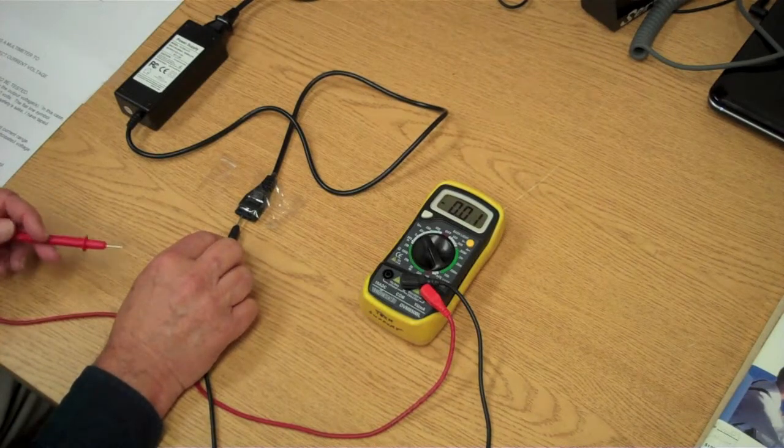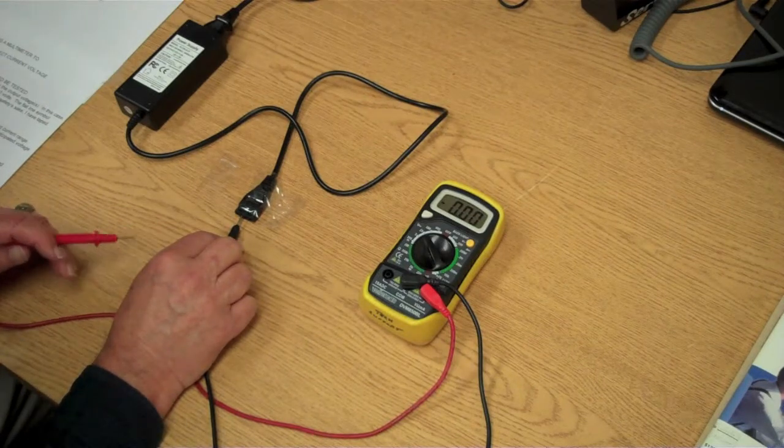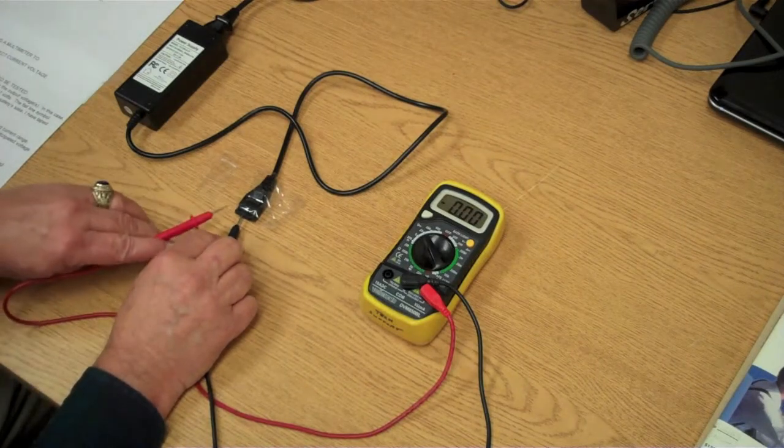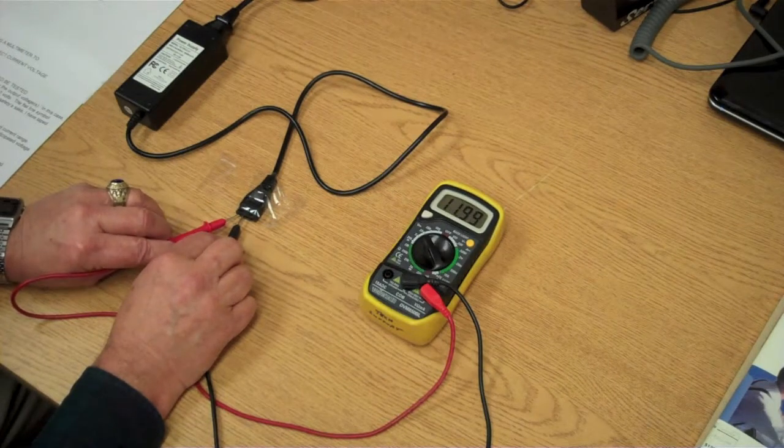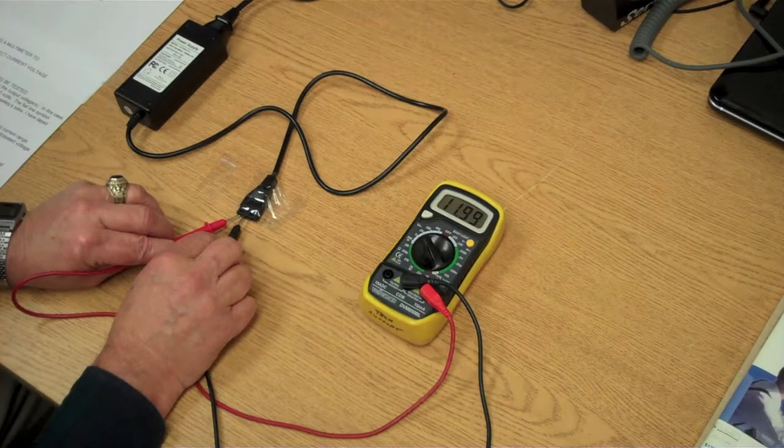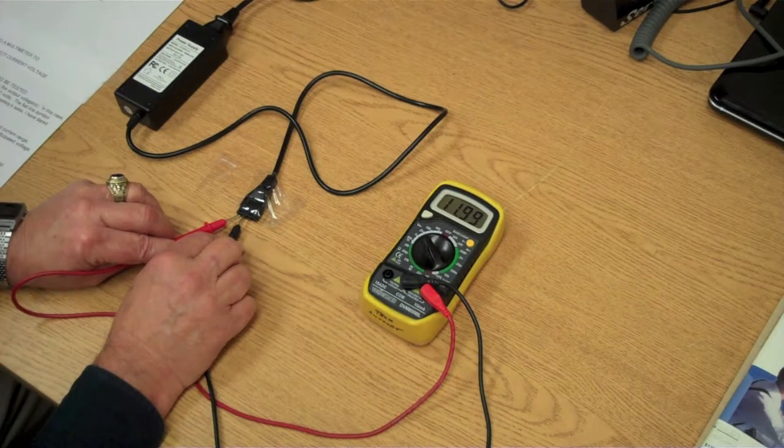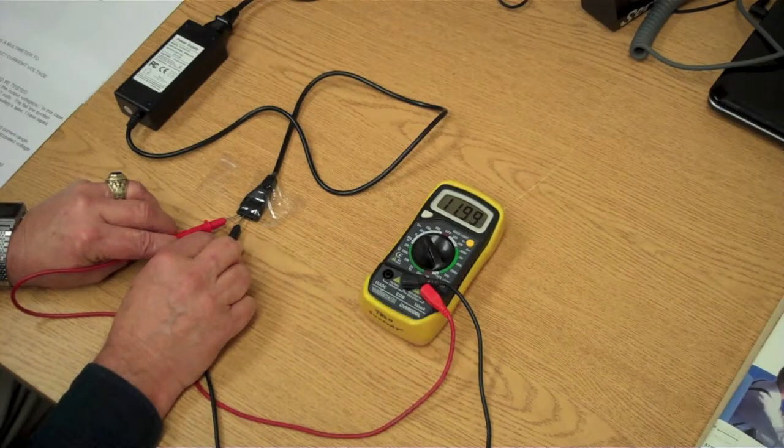On the left side, by our chart before, it said that we are going to have 12 volts on this side here. If you can see the reading on the right on the meter, it says 11.99, which is very close to 12 volts, but it's not 12 volts.